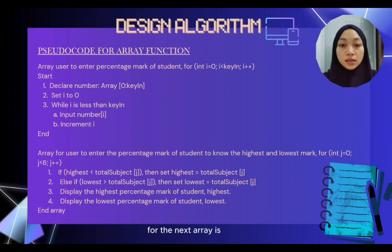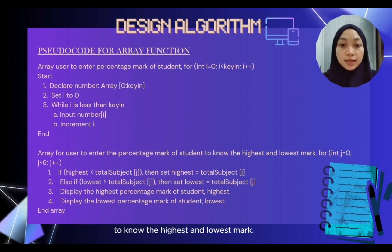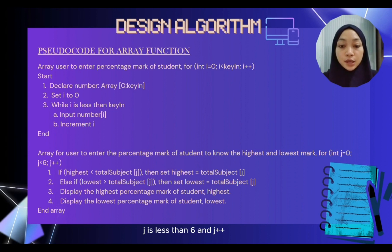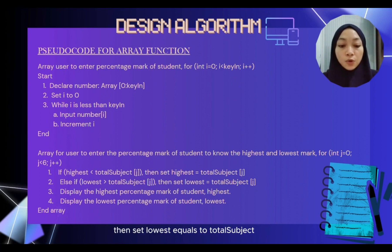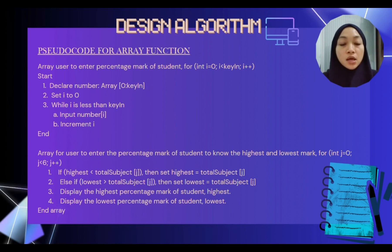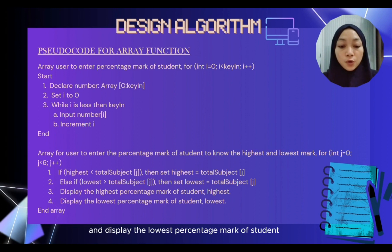For the next array, for the user to enter the percentage mark of students to know the highest and lowest mark: for integer j equals zero, j is less than 6, and j++. If highest is less than total subject array j, then set highest equals to total subject. The system will then display the highest percentage mark of student with the parameter highest, and display the lowest percentage mark of student with the parameter lowest.